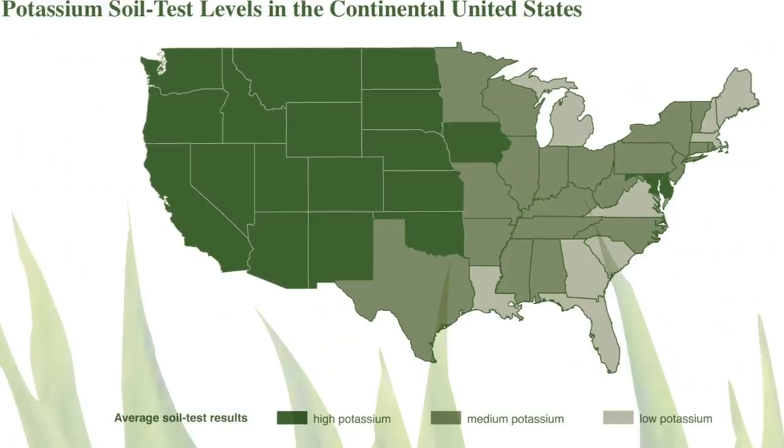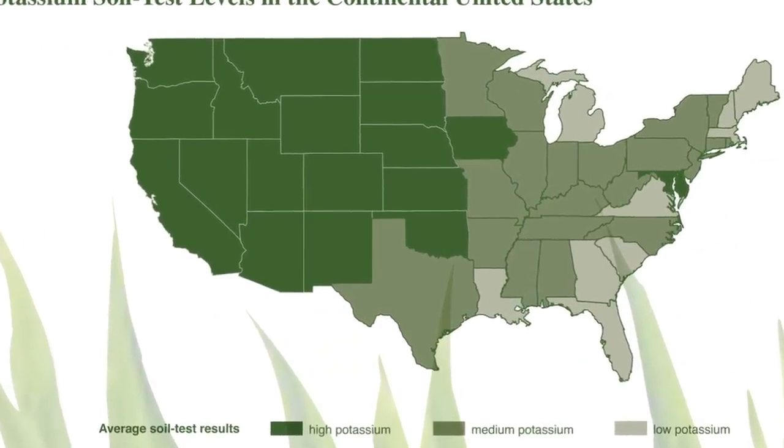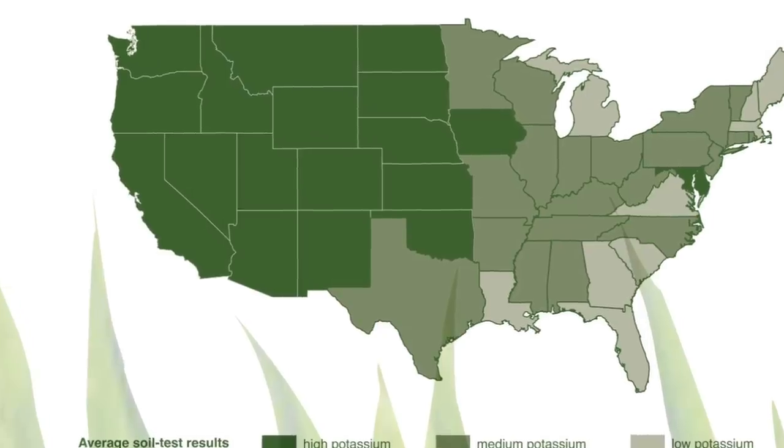Let's talk K. First and foremost, there is a map shown here that gives you an idea of where there is a surplus of K, where there's an average amount, and where there's low K across the country. If you happen to find yourself in one of those low K areas, that's okay — everything can be supplemented, and it can be supplemented very easily.